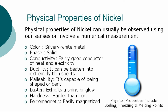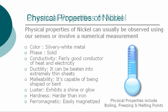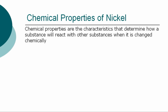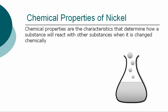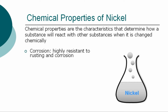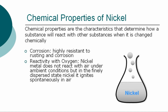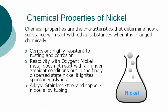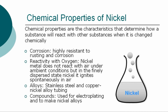Nickel is ferromagnetic, which means it is easily magnetized. The chemical properties are the characteristics that determine how nickel will react with other substances when it is changed chemically. Nickel is highly resistant to rusting and corrosion. Regarding reactivity with oxygen, nickel metal does not react with air under ambient conditions, but in the finely dispersed state, it ignites spontaneously in air. Common alloys include stainless steel and copper-nickel alloy tubing. Its compounds are used for electroplating and to make nickel alloys.